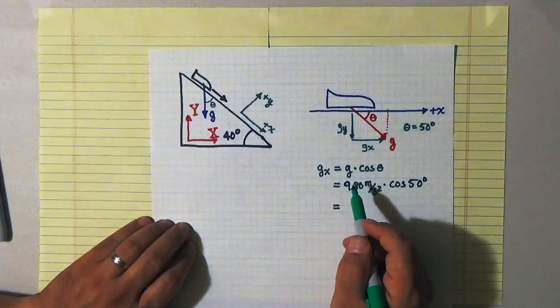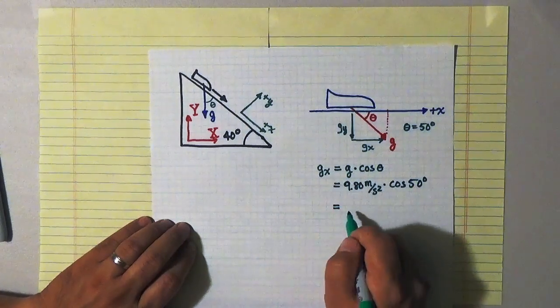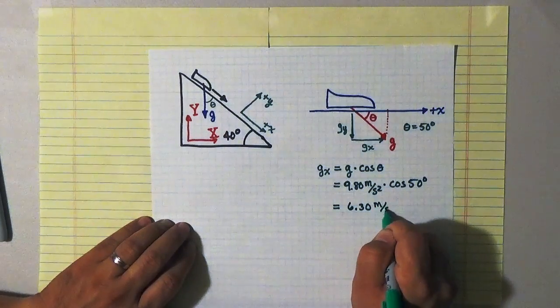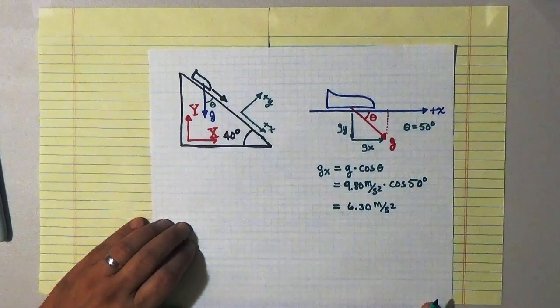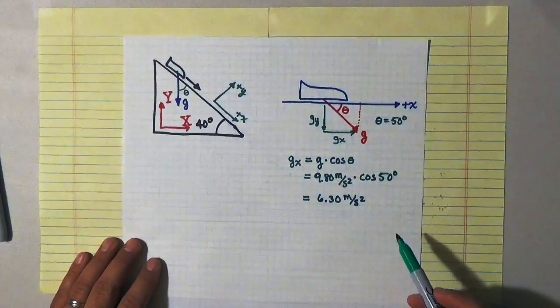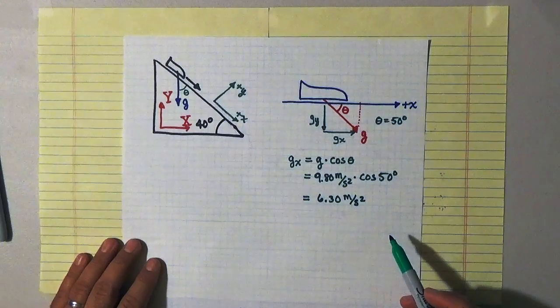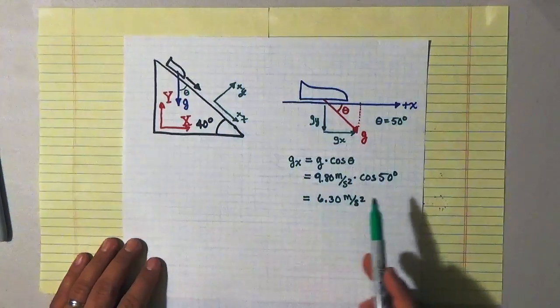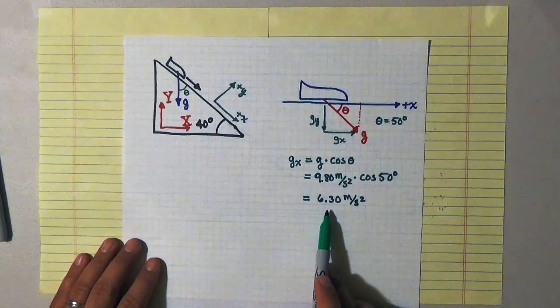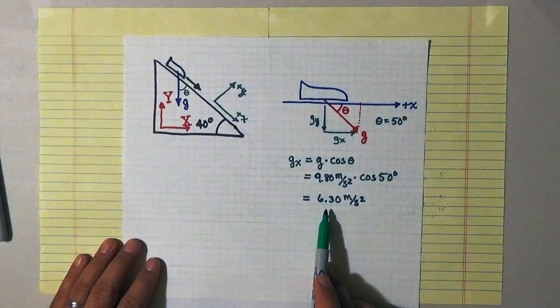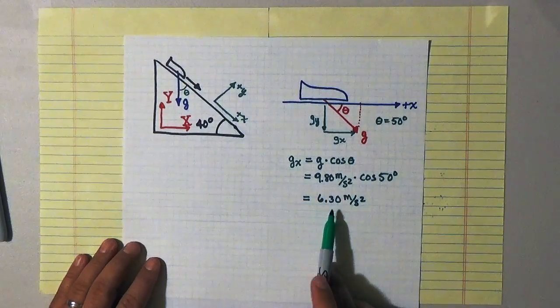And if I evaluate what that is, I find that the x component of g is 6.30 meters per second per second. So what does that mean? What that means is from the perspective of the bobsled, the only thing that's happening is I'm accelerating straight down the slope as if I was being accelerated with an acceleration of 6.30 meters per second per second.